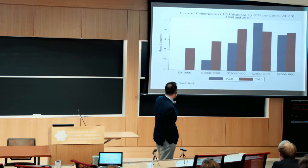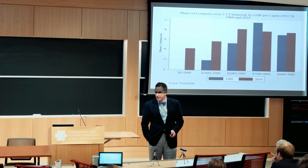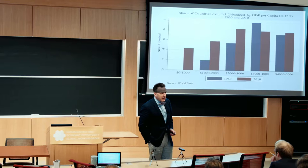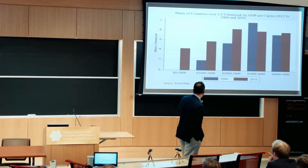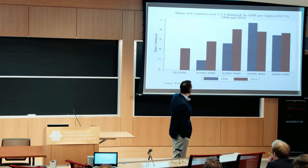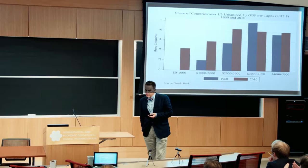The big difference in this graph is here: what share of countries with per capita incomes below $1,000 were more than one-third urban in 1960? Easy number to remember — it's zero. As throughout almost all of human history, to be poor was to be rural, and to be rural was to be poor. Now all of a sudden, more than 40% of these countries are more than one-third urban. Going to the $1,000–$2,000 range, the growth is between 20% and almost 60% — an enormous shift.